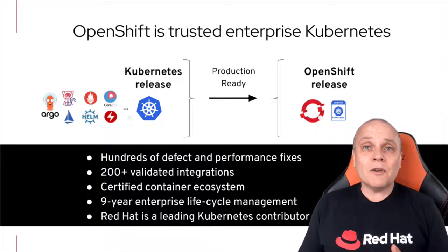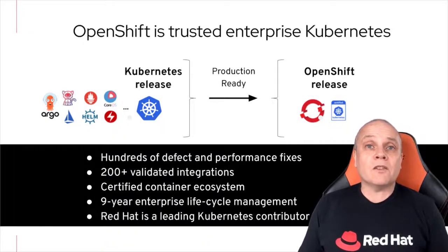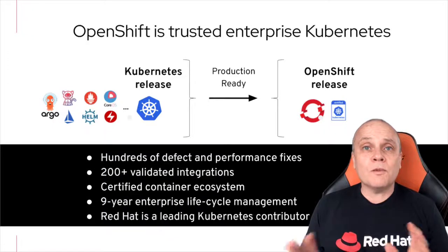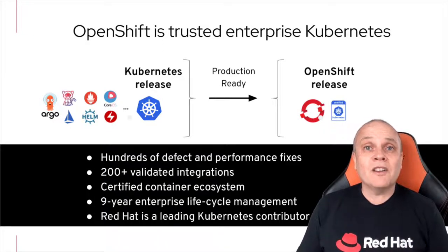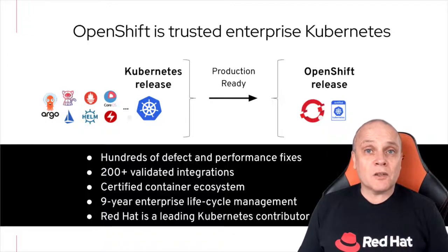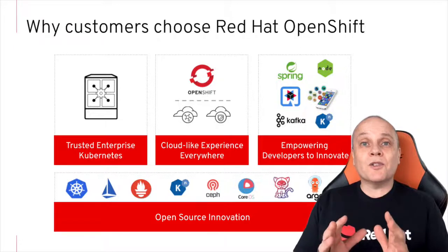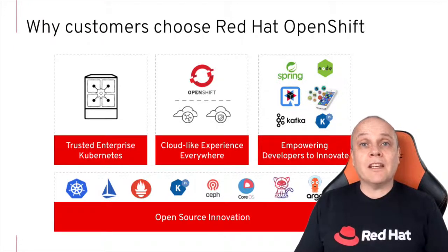When the upstream community declares a release ready, we typically find defects that we will fix in the corresponding downstream releases. We can do that because we've been contributing to Kubernetes and many other open-source projects that OpenShift is based on since day one, with Red Hat being the largest enterprise developer of Kubernetes, besides the project sponsor, which is Google. The guiding principles behind OpenShift can be categorized into a handful of key areas.